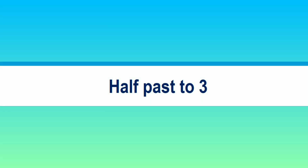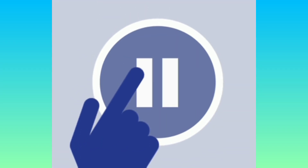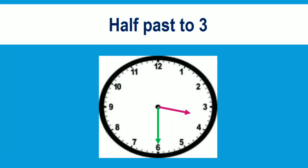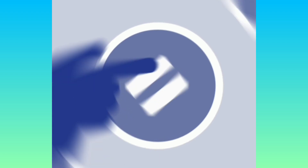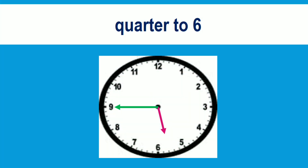Next one is half past three. Children, listen carefully — half past three. Pause the video. The time is three hours thirty minutes. Super, children! Next example: quarter to six. Pause the video. Good — what's the time? Five hours forty five minutes. Correct, children!